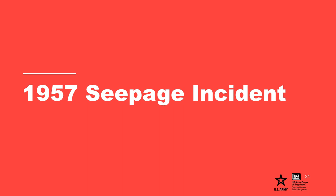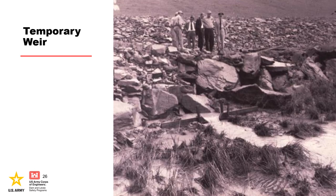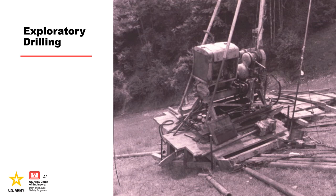The next seepage incident occurred in 1957. On May 8, 1957, the dam tender reported muddy water flowing from the rock drain at the downstream toe of the dam in the original stream channel, noting that discoloration had been observed a week earlier and flow appeared to be increasing. On May 9, a temporary weir was constructed, and by the next morning flow had increased significantly. A partial drawdown of the reservoir level to 30 feet below summer pool was ordered. Drilling to locate the source proceeded over the next two weeks. Holes were augered in the embankment with no sign of seepage or voids, and holes were core drilled along the downstream right abutment contact. Drill water was lost in all three abutment holes; however, dye added to the holes did not appear in the seepage at the downstream toe.